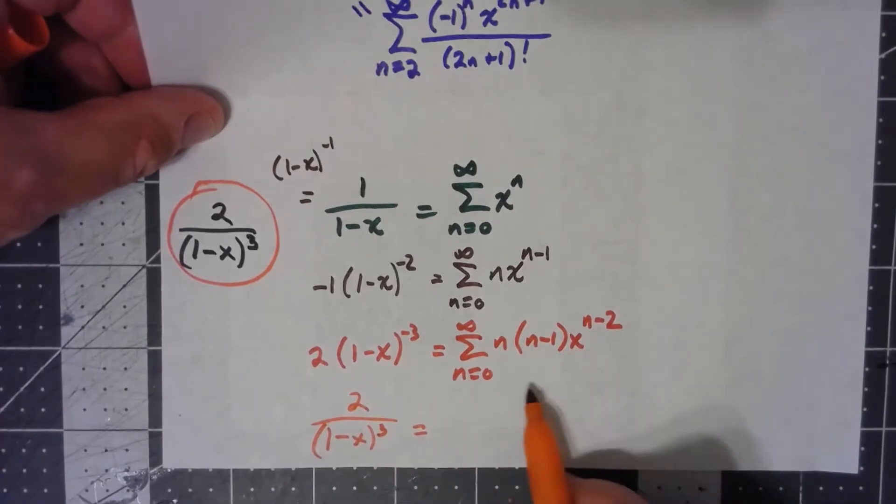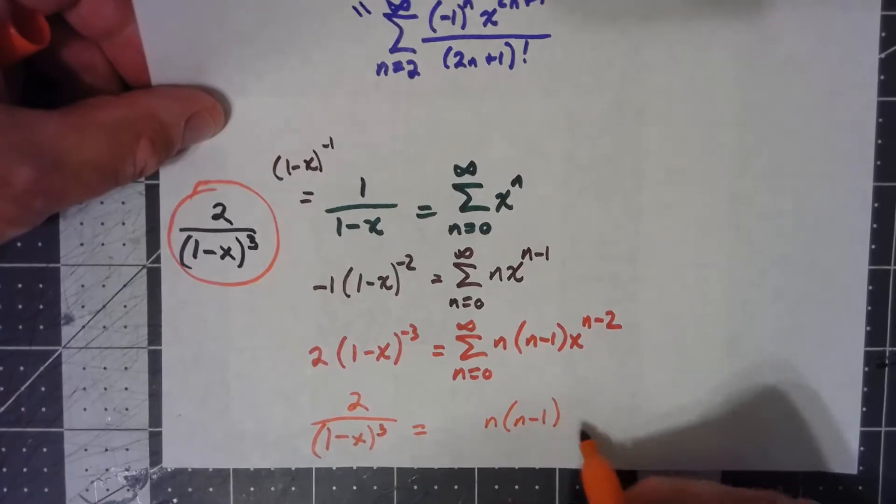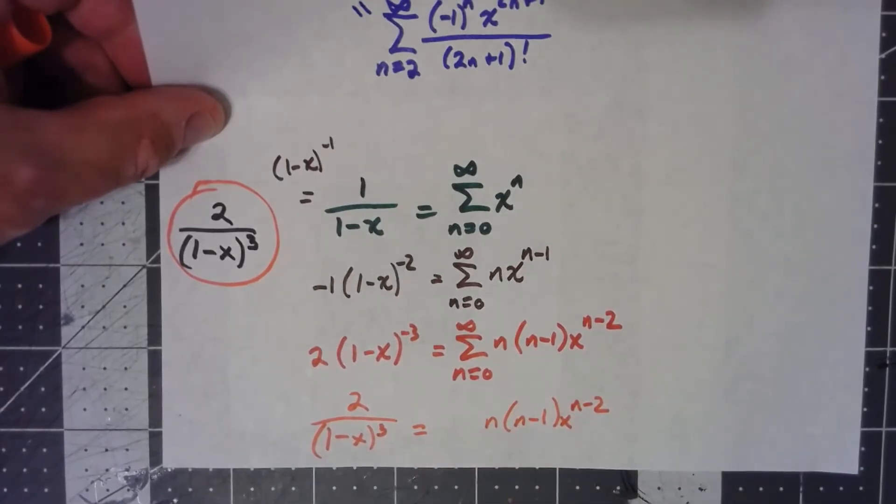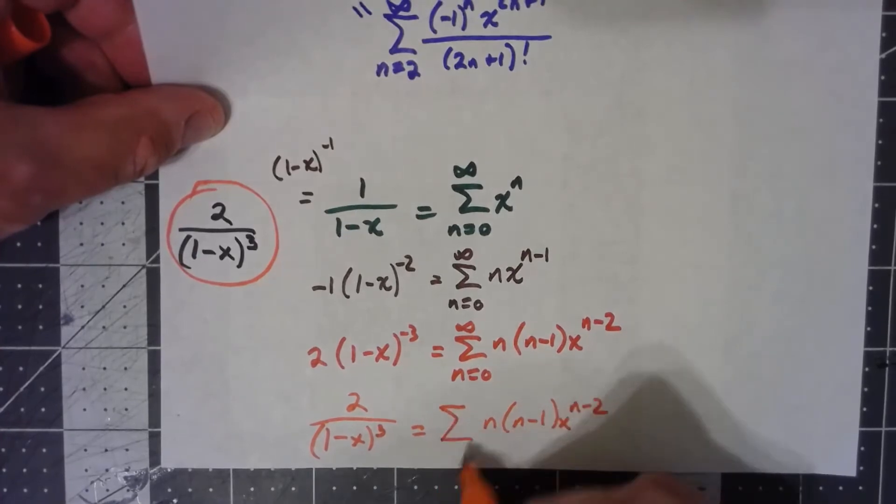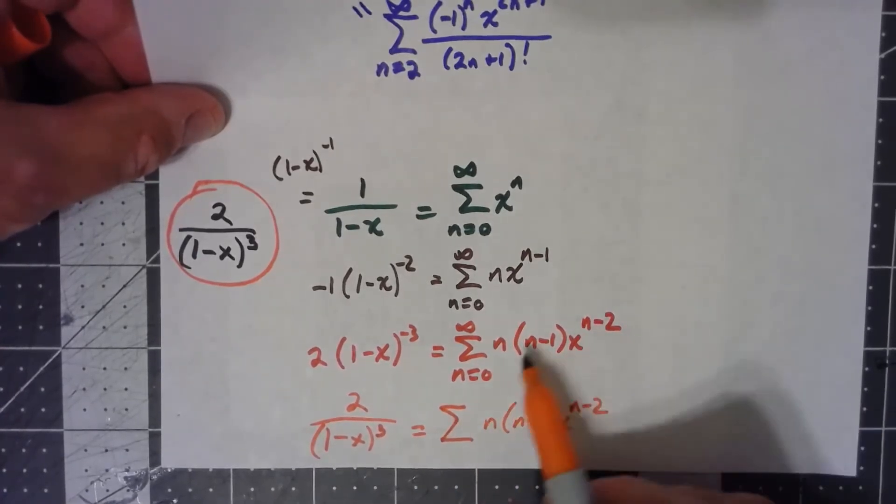Now, over here, I mean, this is the basic formula I've got here. And technically, it works the way it is. But it is worth noting, what happens when n equals 0? When n equals 0, I just get 0.